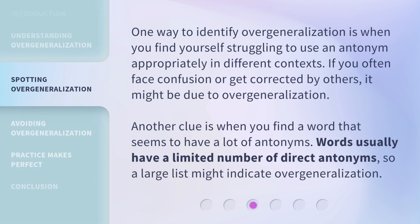One way to identify overgeneralization is when you find yourself struggling to use an antonym appropriately in different contexts. If you often face confusion or get corrected by others, it might be due to overgeneralization. Another clue is when you find a word that seems to have a lot of antonyms. Words usually have a limited number of direct antonyms, so a large list might indicate overgeneralization.